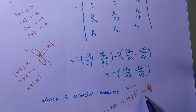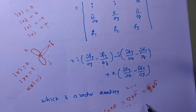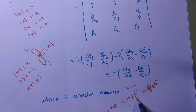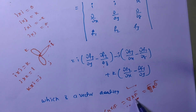So if del cross f̄ equals zero vector, then f̄ is called an irrotational vector, and the field can be called a conservative field. Curl is nothing but rotation. If curl f̄ equals zero vector, then f̄ is an irrotational vector. We will discuss irrotational vectors and related problems later.